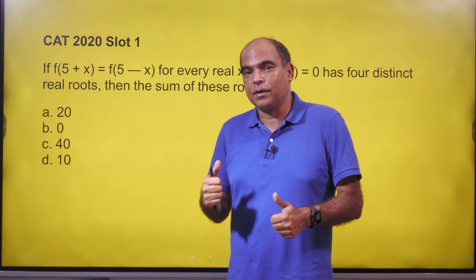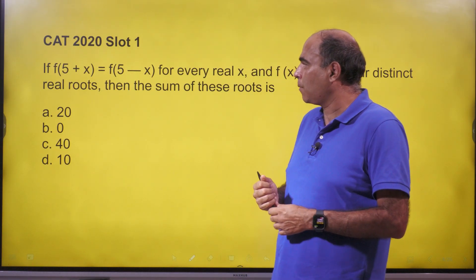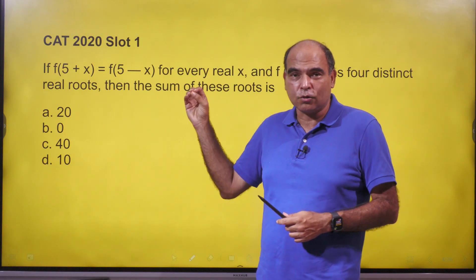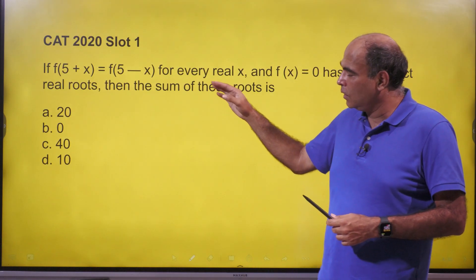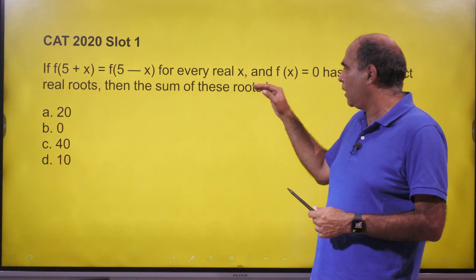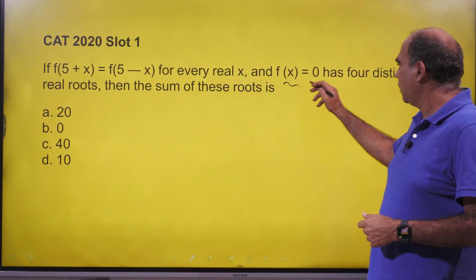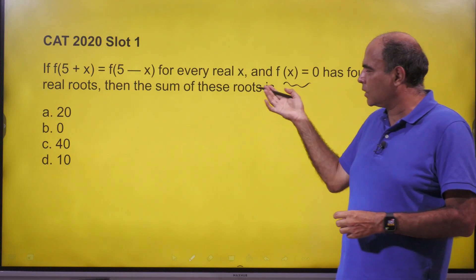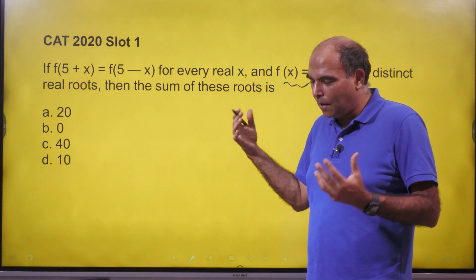Hey guys, back again with the 60-second series. You're with me, Arun Sharma. Question from CAT 2020 Slot 1, functions question: If f(5+x) = f(5-x) for every real x, and f(x) = 0 has four distinct real roots, then the sum of these roots is? So what will happen is...